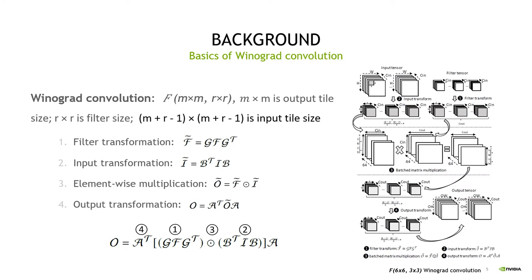The diagram shows the overview of F6×6, 3×3 Winograd Convolution on real tensor data. The shape of the input tensor is in the format NCHW, which will be divided into 8×8 input tiles to proceed into input transformation. The filter tensor tiles are transformed through filter transformation. Then the result tensors of input transformation and filter transformation conduct elementwise multiplication, which can be converted to batched matrix multiplication. Finally, by calculating the output transformation and combining the result tiles, the Winograd Convolution is completed.